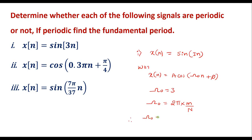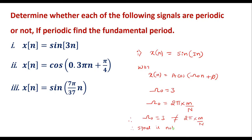Since ω₀ = 3 is not equal to 2π·(m/N), the signal is not periodic.